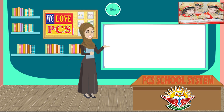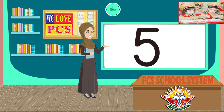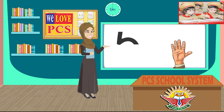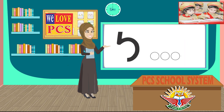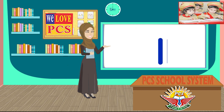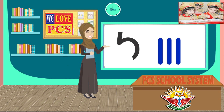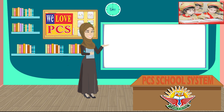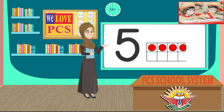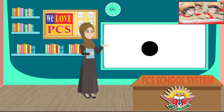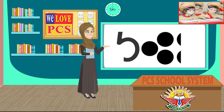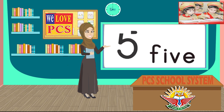How can we show the number five? Let's find out. I see five fingers. I see five circles. I see five tally marks. I see five counters in the ten frame. I see five dots. I see the number and the number word.